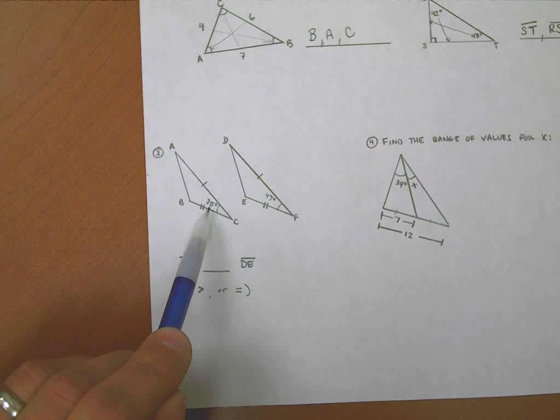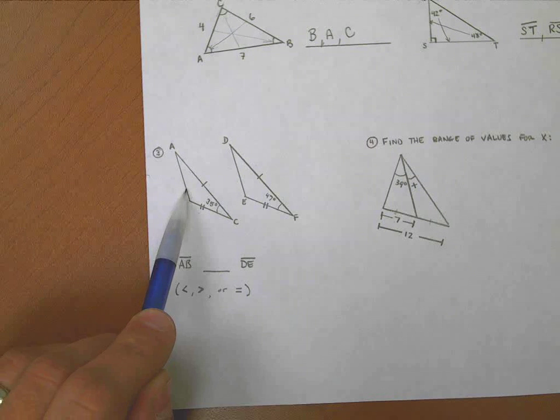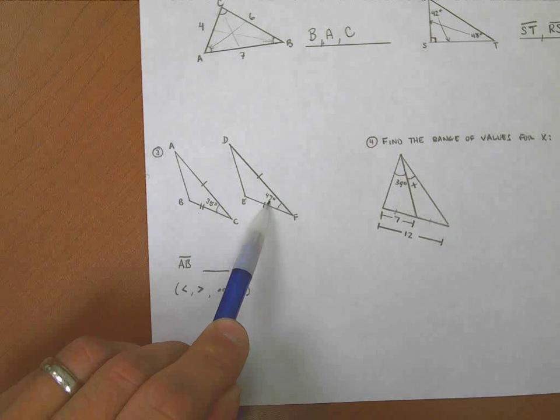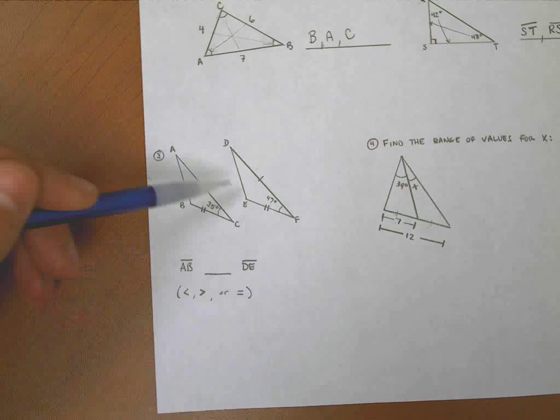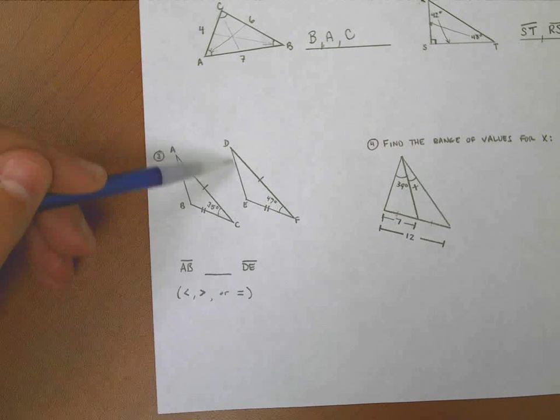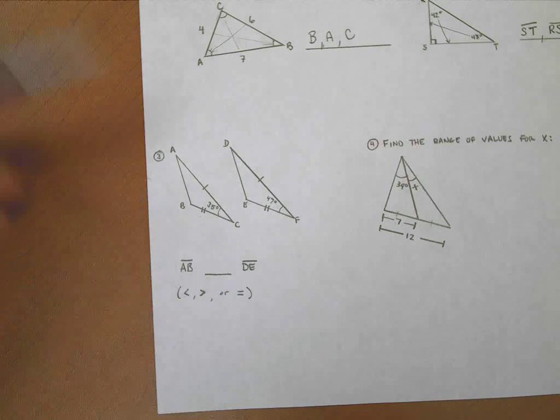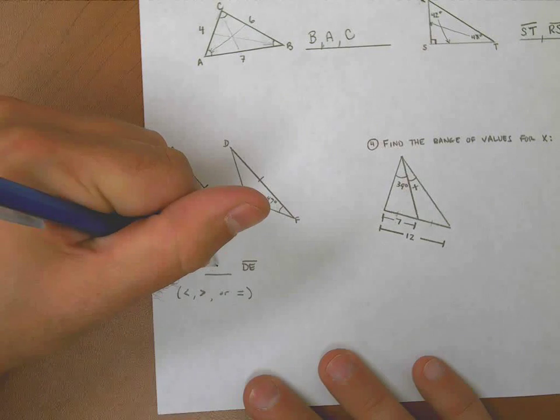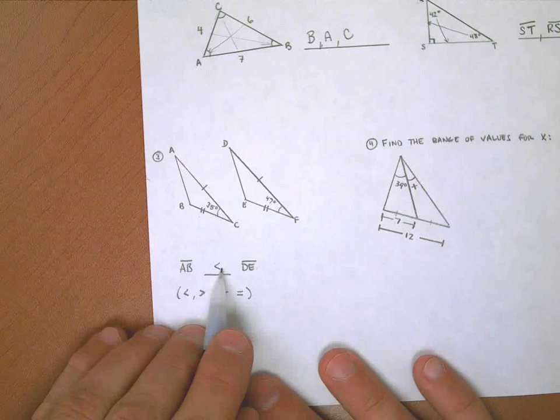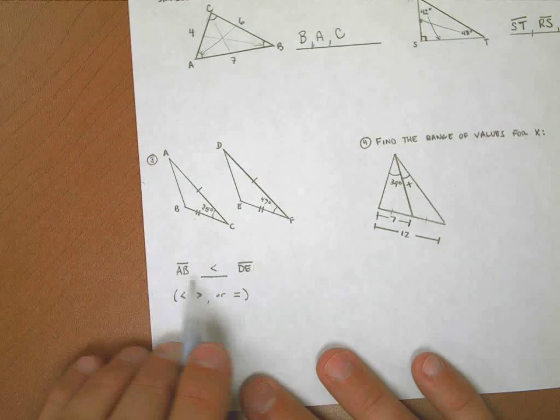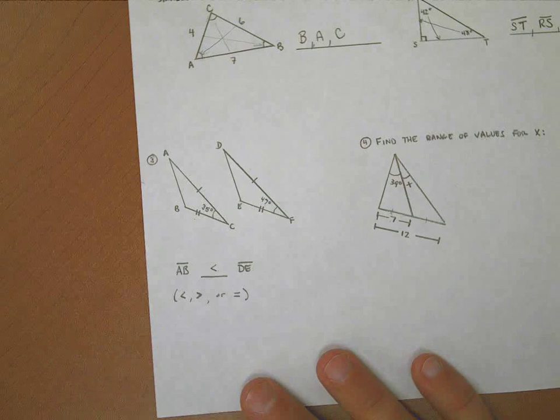If I know the hinge theorem, I know that the 35-degree angle here is not going to produce as long of a side length as this 47. I've spread the two lines out farther, so there's a longer distance from D to E. D to E is going to be the longer line, so I need to fill this in with: DE is greater than AB, or AB is less than DE.